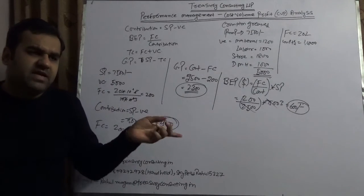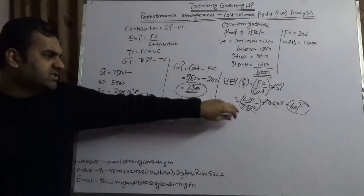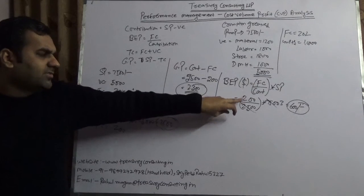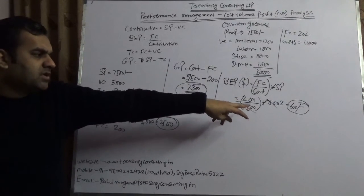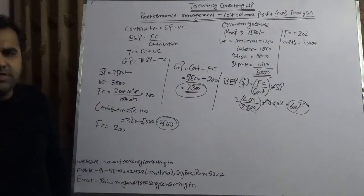This is in fact the fixed cost by contribution times selling price. They would be able to achieve this.